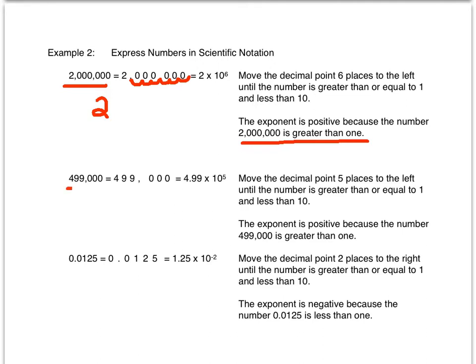The next example is 499,000. Again, there is an assumed decimal point at the end of the number. We'll move the decimal point five places to get a number that is greater than or equal to one and less than ten. 4.99 is greater than or equal to one and less than ten, so the answer is 4.99 times 10 to the fifth power because we moved the decimal point five places to the left. The exponent is positive because 499,000 is greater than one.